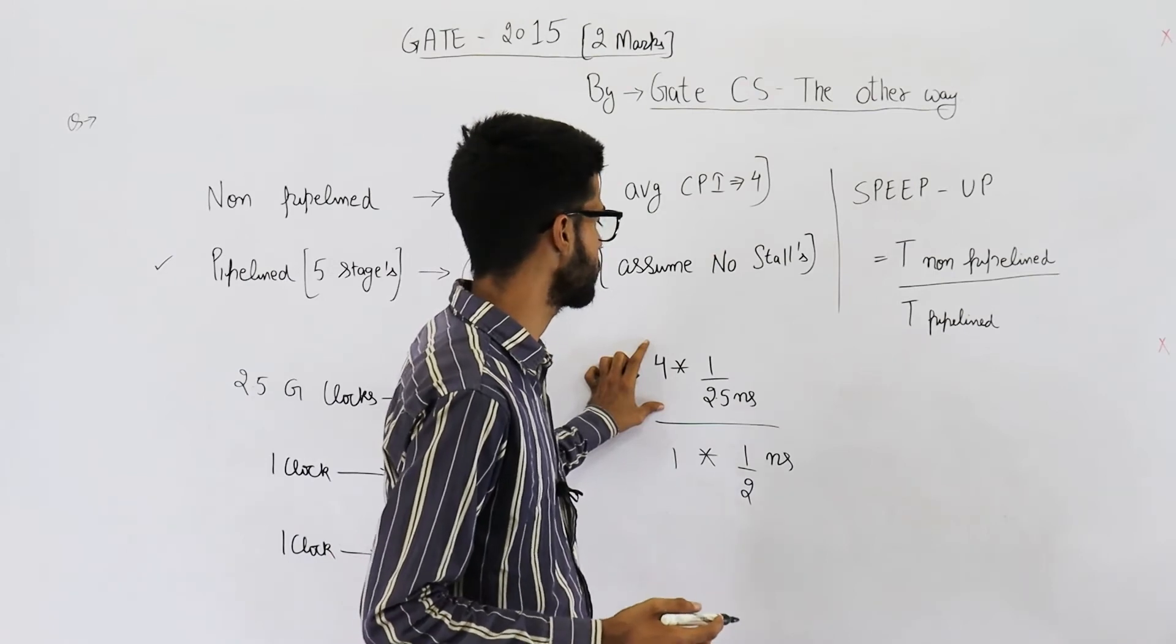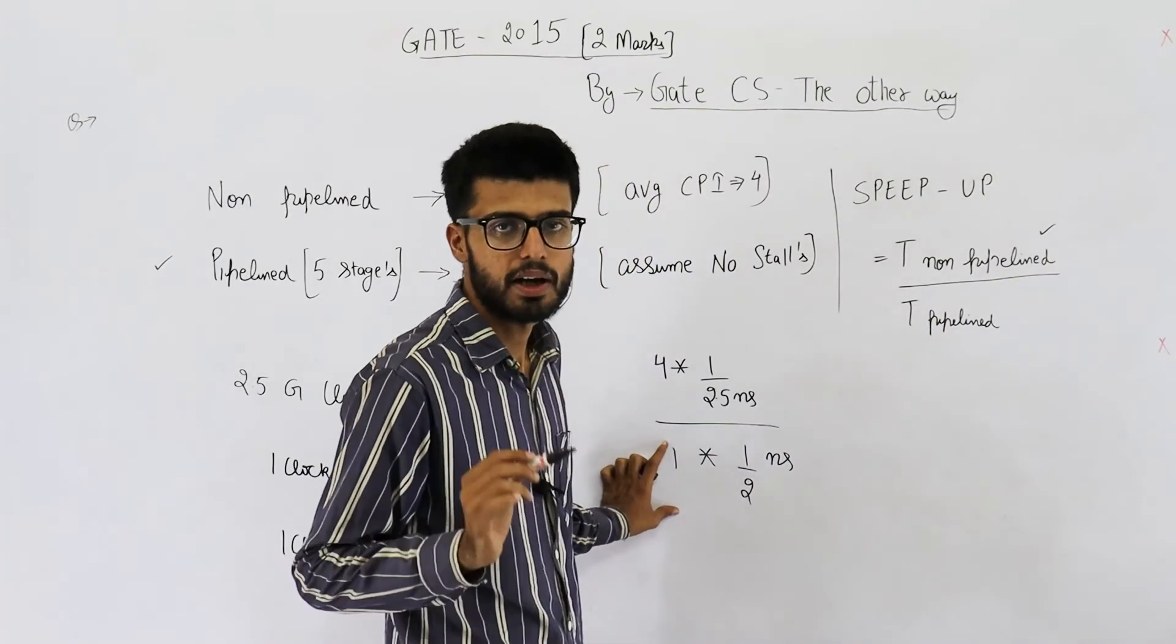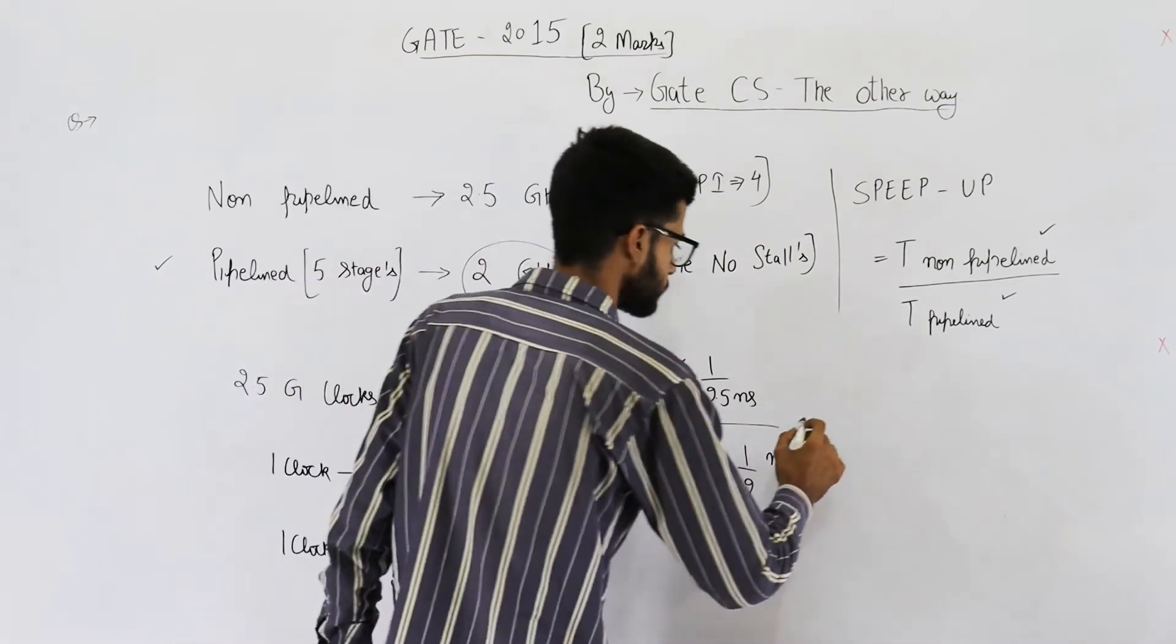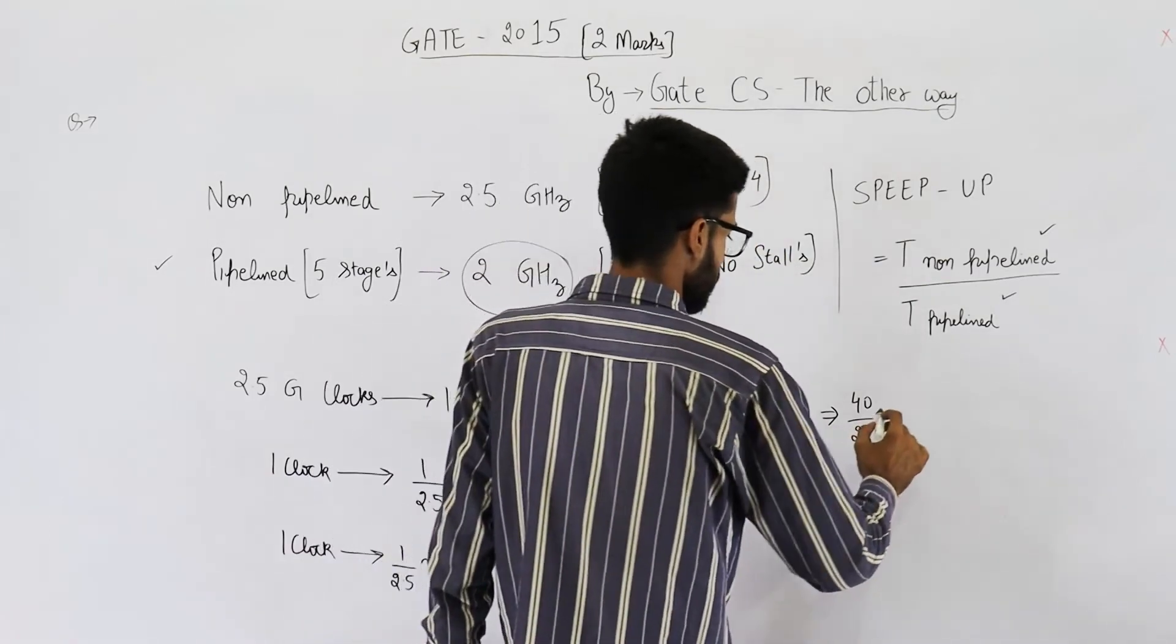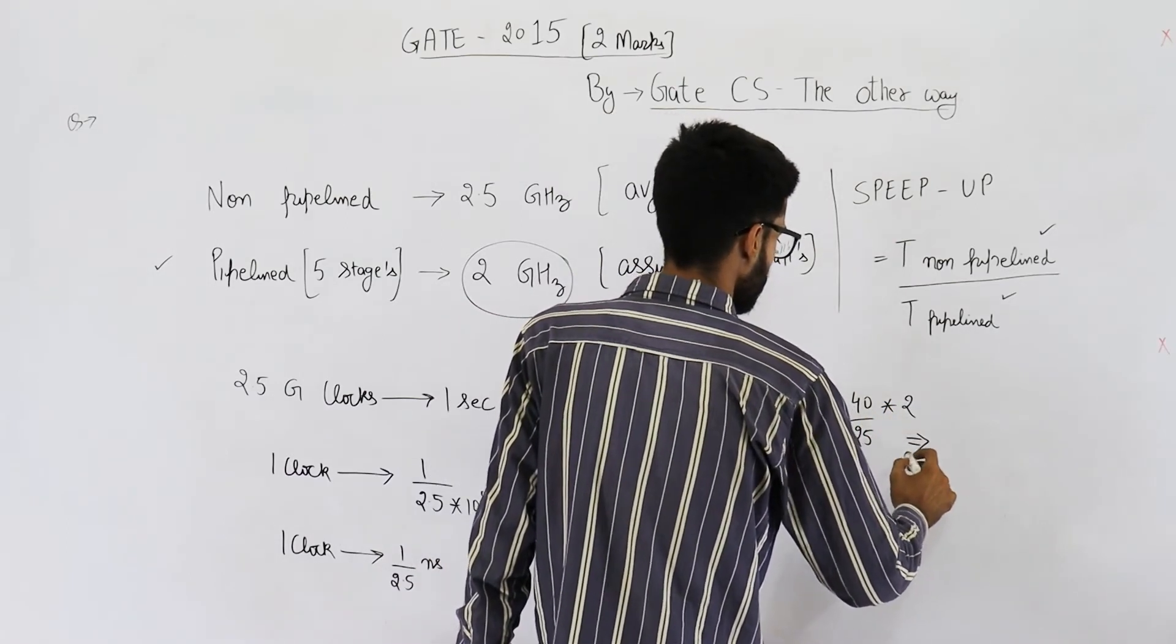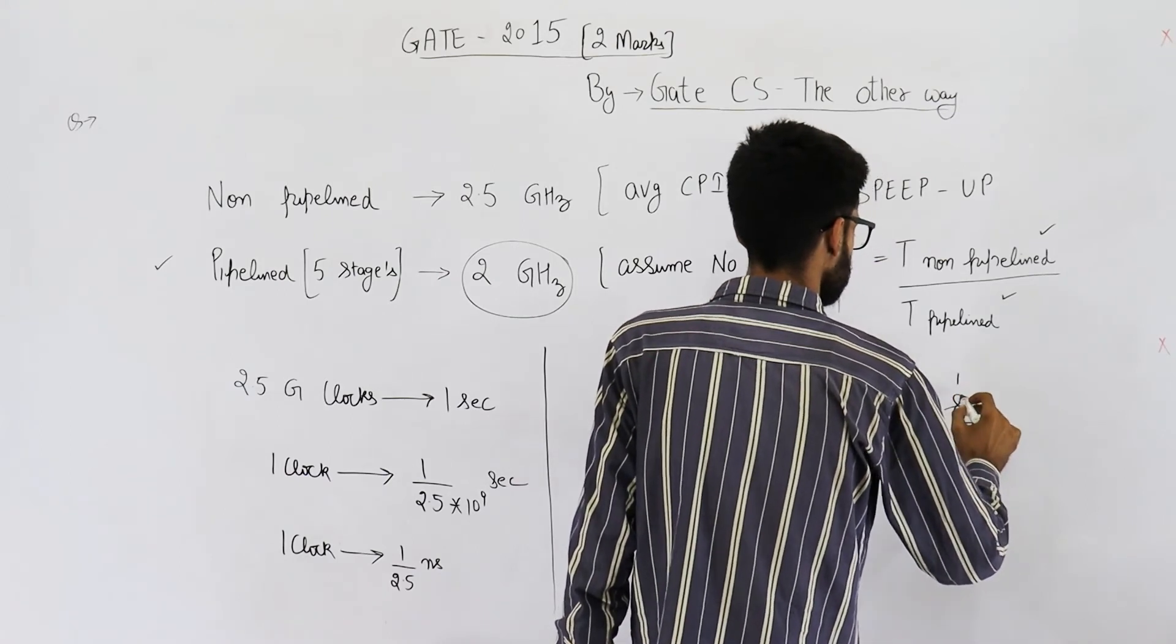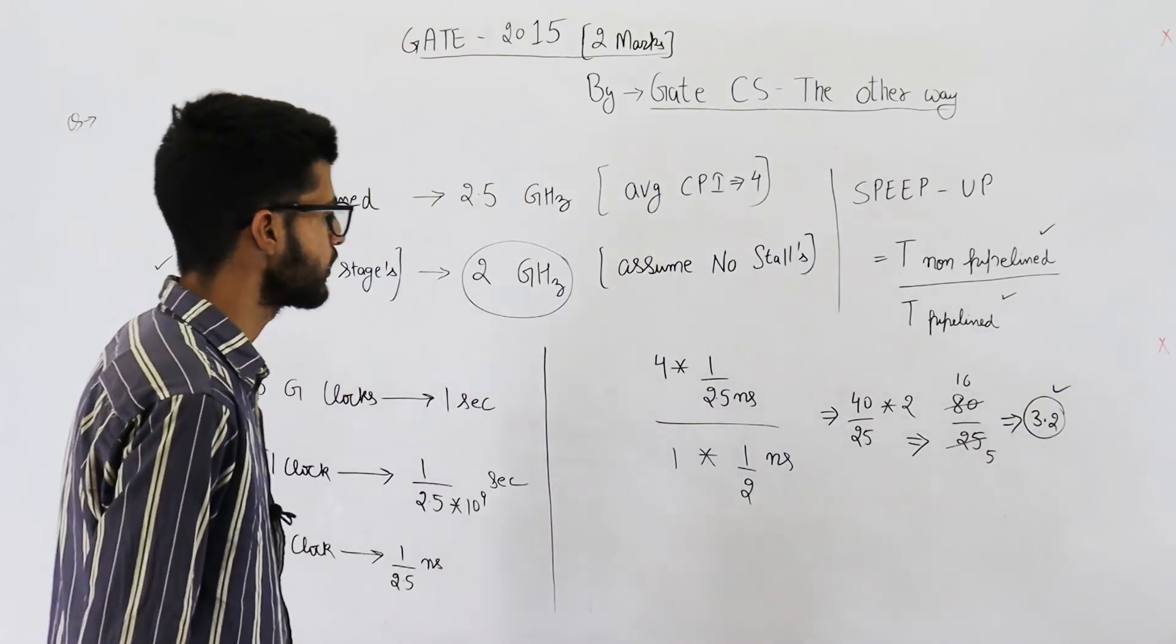So, this is time taken by non-pipelined processor to execute one instruction. This is time taken by pipelined processor to execute one instruction. You divide them both and you will get your answer. So, this is 40 upon 25 into 2. Your answer is 3.2.